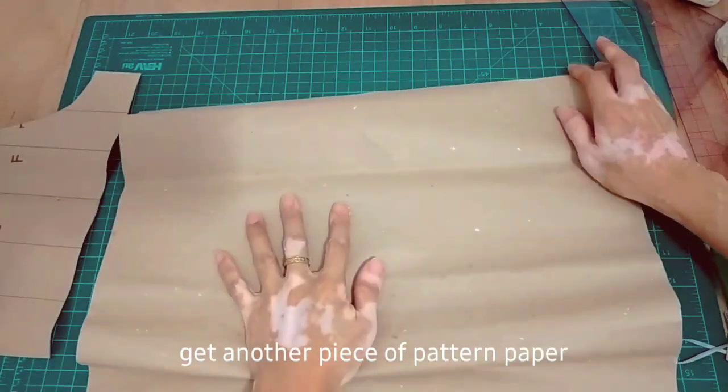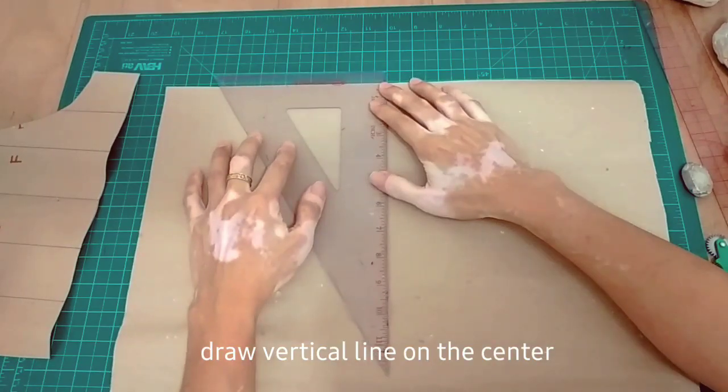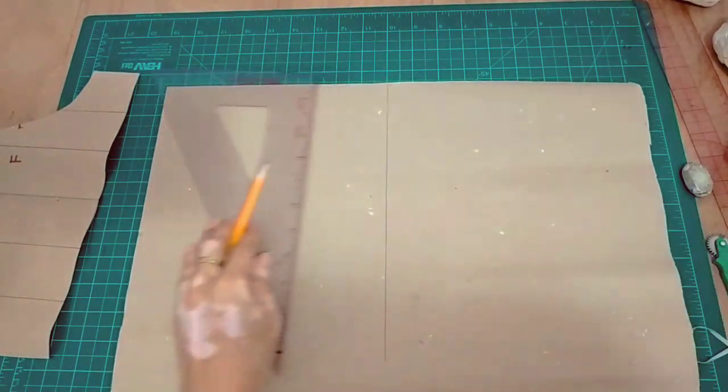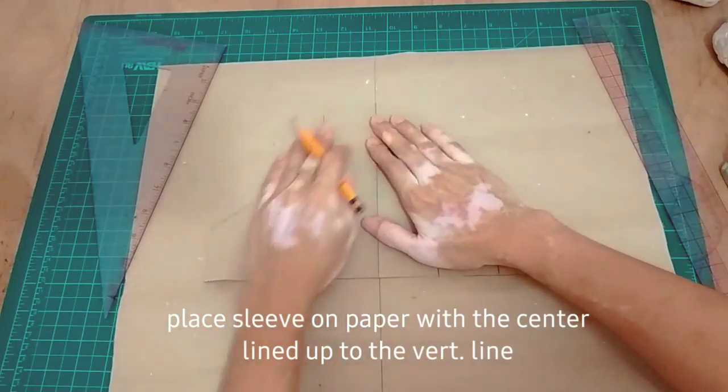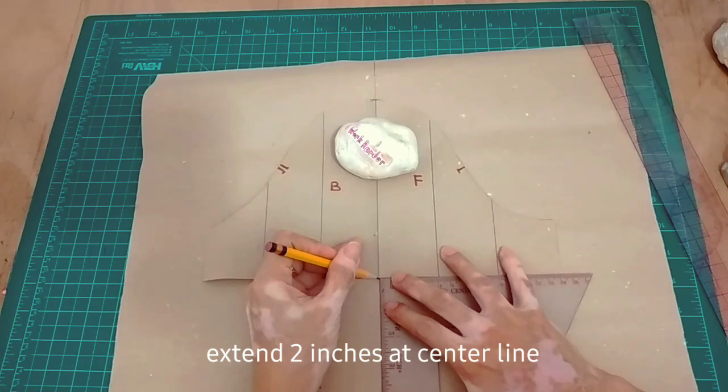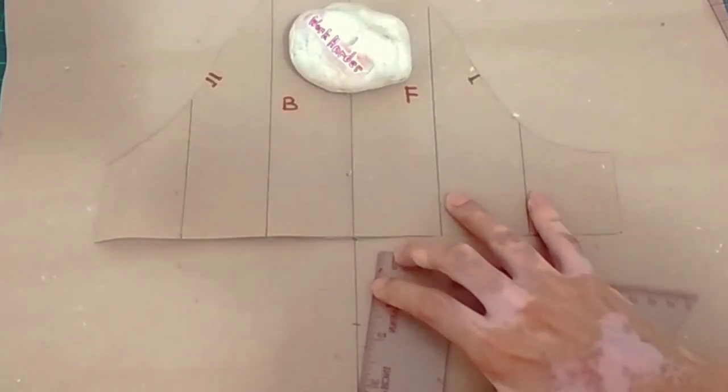Get another piece of pattern paper and then draw a vertical line sa center ng paper. This will be our guide for the sleeve pattern, so match mo lang yung center and then extend 2 inches sa center line.